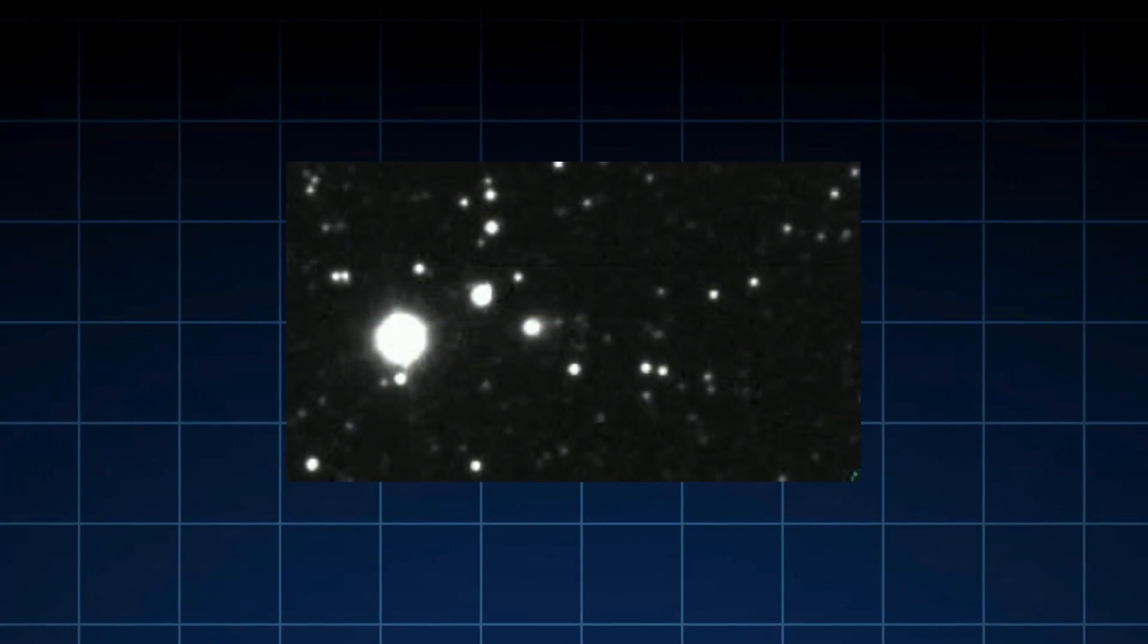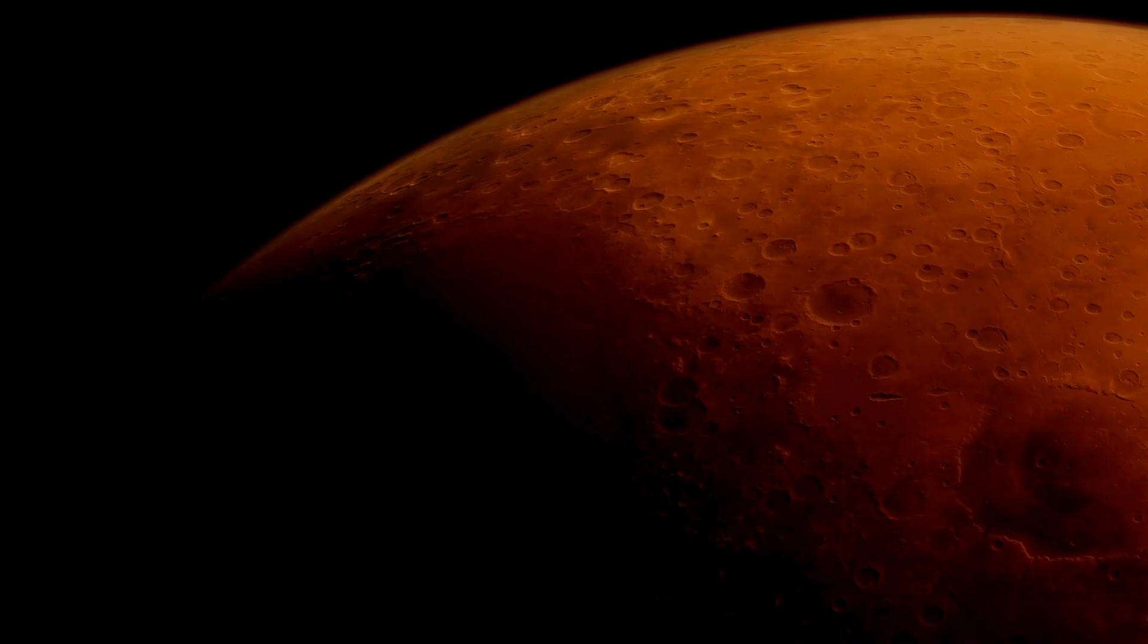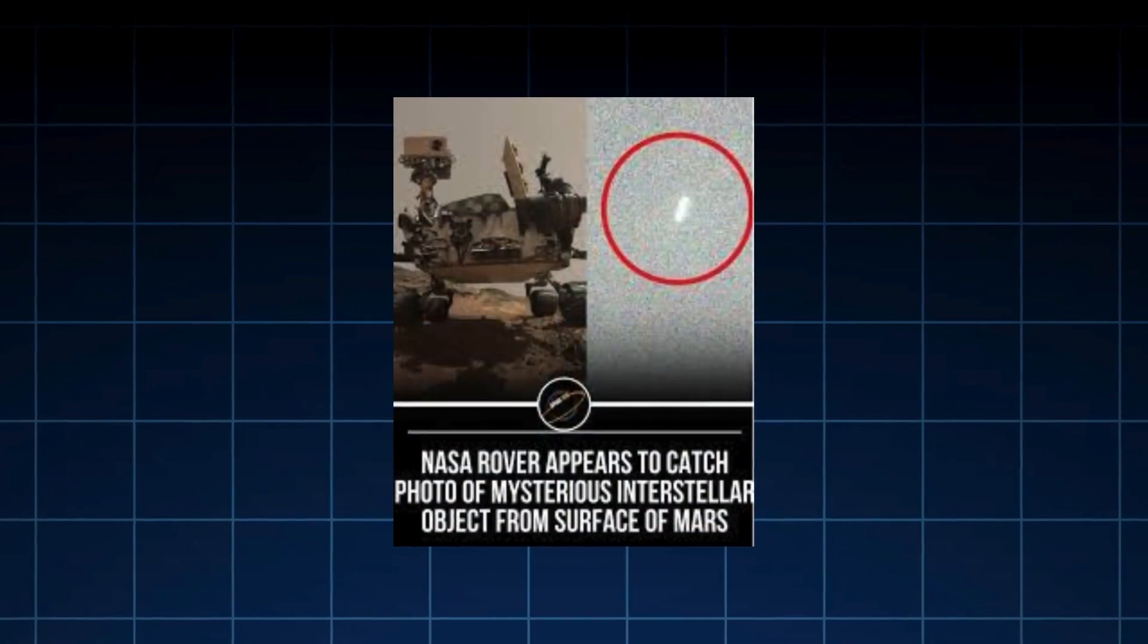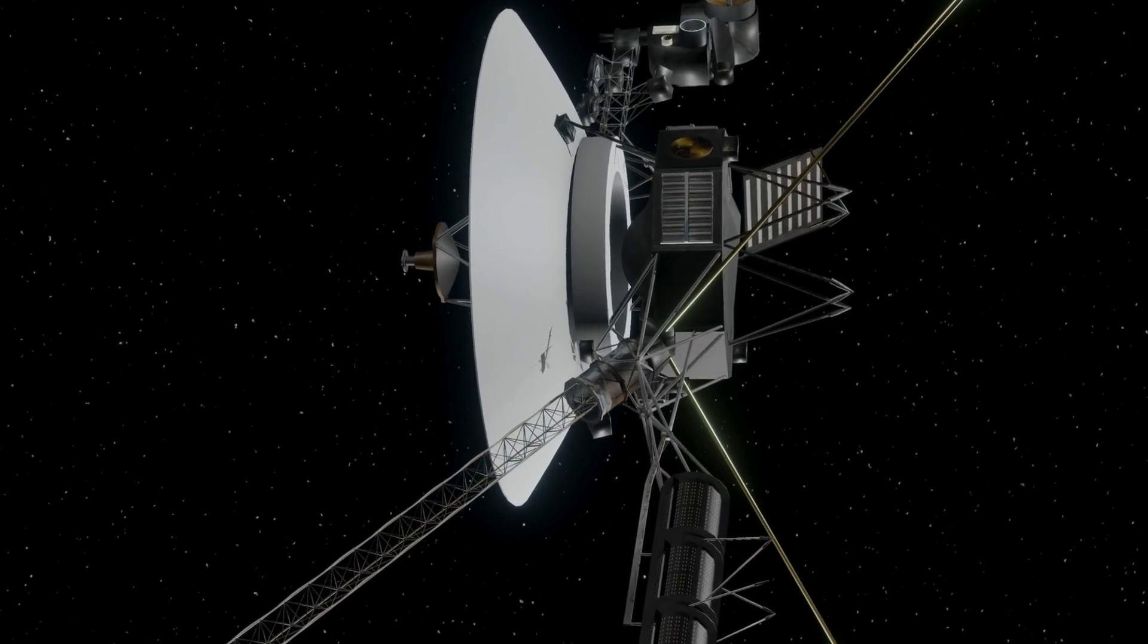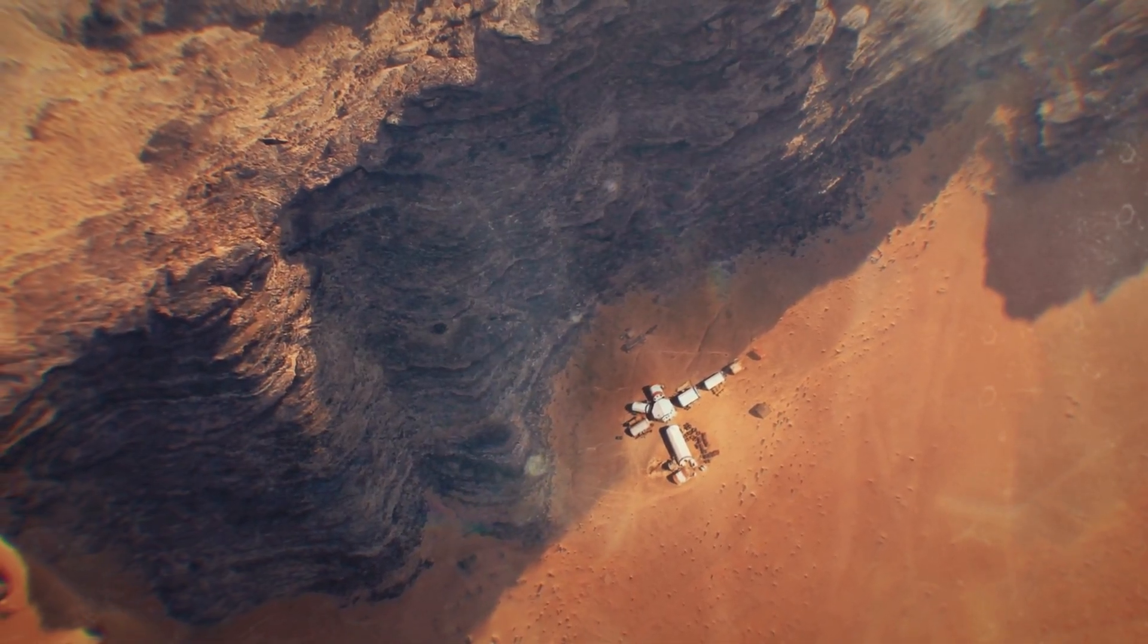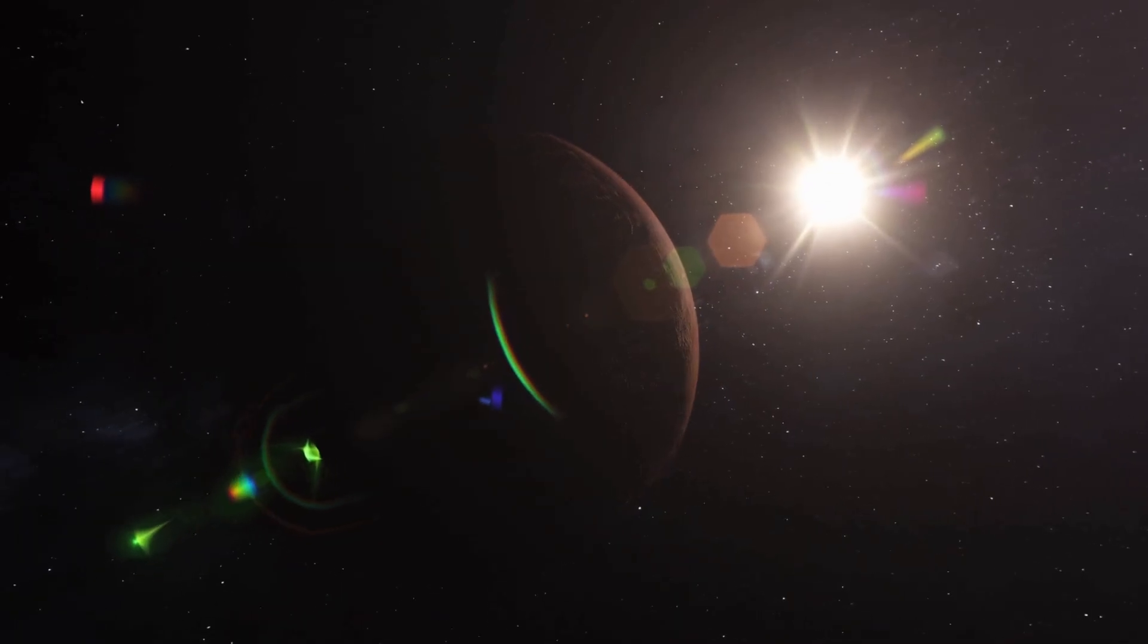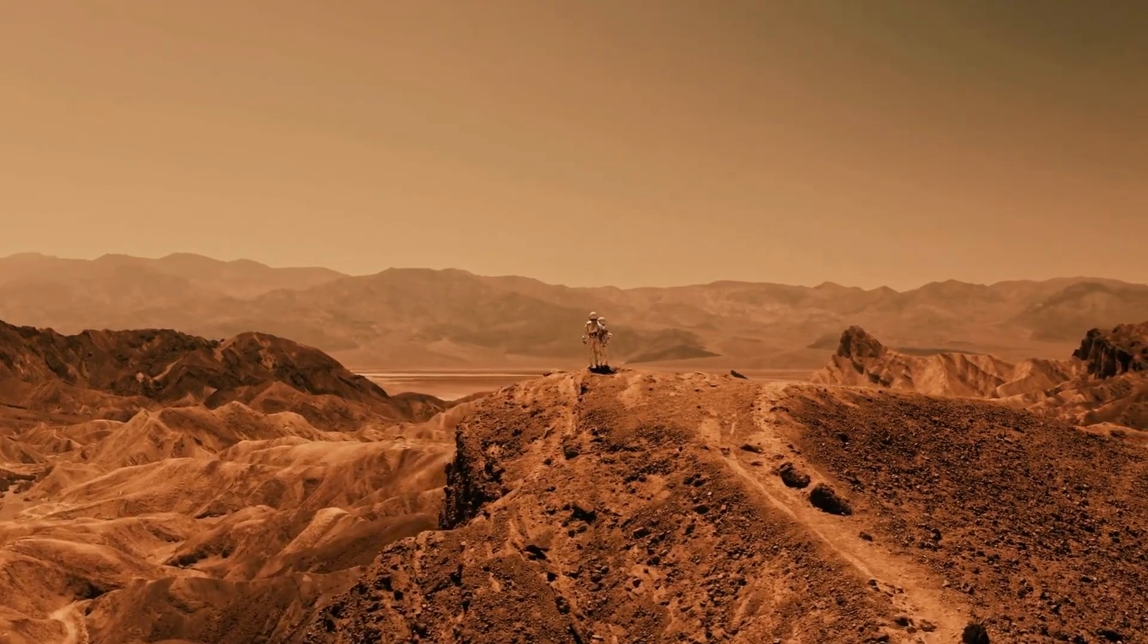3I-Atlas' closest planetary encounter came on October 3rd, 2025, when it passed 0.19 astronomical units from Mars. NASA's Perseverance rover snapped a streaky image of the comet in Mars' night sky using 30-second exposures, while the European Space Agency's ExoMars probe captured a clearer view from orbit. Sadly, high-resolution images from NASA's Mars Reconnaissance Orbiter haven't been released, possibly due to a U.S. government shutdown delaying operations. But these Mars snapshots are a rare treat, showing 3I-Atlas as a glowing smudge against the Martian sky.